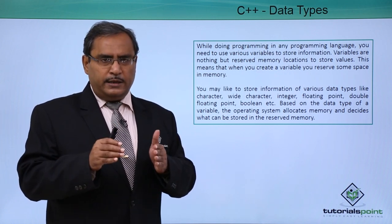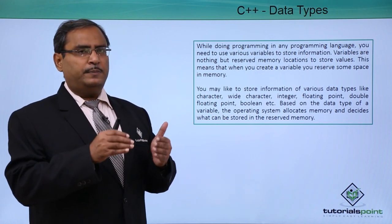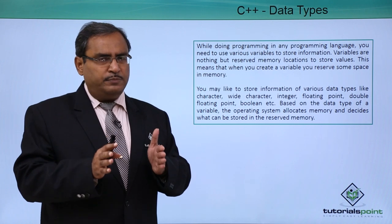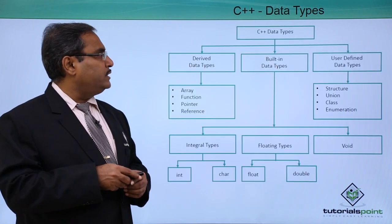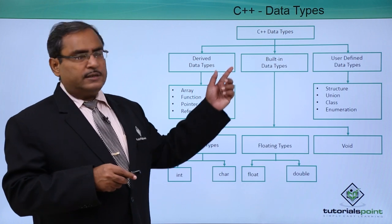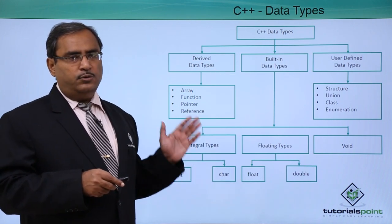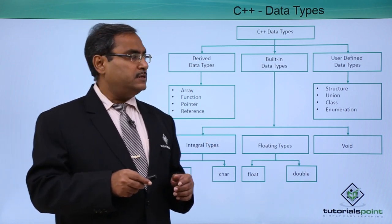Variable memory spaces are getting allocated and it will also decide the size of the memory block and the values will be stored in those memory locations. This is our C++ data types and this is the respective hierarchy in which we can divide these C++ data types.